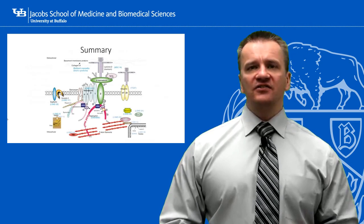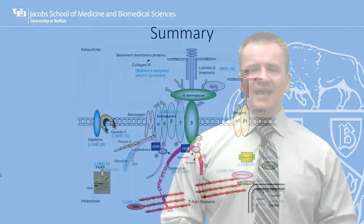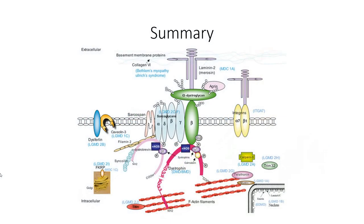In the previous session, we looked at the dystrophin-associated glycoprotein complex and discussed how mutations to proteins within this complex can lead to membrane instability and the degeneration associated with muscular dystrophy. We now consider mutations to specific proteins within this complex, beginning with the most commonly affected and best studied of these proteins – dystrophin itself.